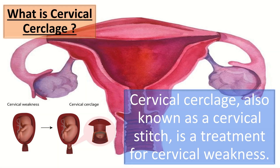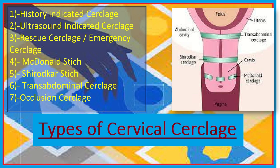Cervical cerclage, also known as cervical stitch, is a treatment for cervical weakness when the cervix starts to shorten and open too early during pregnancy, causing a late miscarriage or preterm birth. Types include history-indicated cerclage, ultrasound-indicated cerclage, rescue/emergency cerclage, McDonald's stitch, Shirodkar stitch, transabdominal cerclage, and occlusion cerclage.